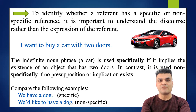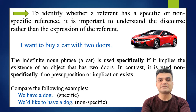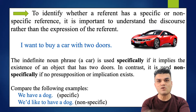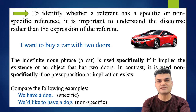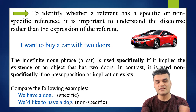For example, 'I want to buy a car with two doors.' The indefinite noun phrase 'a car,' though indefinite, is used specifically here because it implies the existence of an object that has two doors. In contrast, it is used non-specifically if no presupposition or implication exists - if you don't show the type of car, it will be something non-specific, and the listener may ask questions like what type of car, which car, or what color.